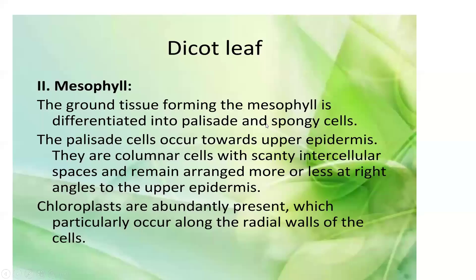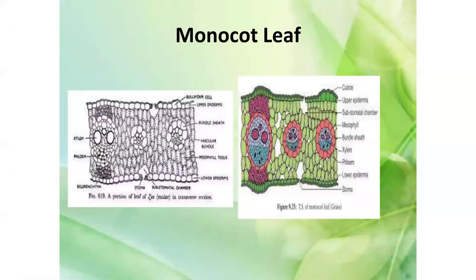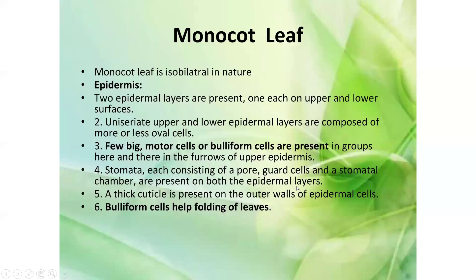Next is the monocot leaf. When we observe the transverse section of the monocot leaf, there is no differentiation — the mesophyll tissue shows no differentiation of palisade and spongy tissue; all cells are similar. The vascular bundles are present. The monocot leaf is isobilateral in nature, meaning there is no differentiation of dorsal and ventral sides, unlike the dicot leaf.